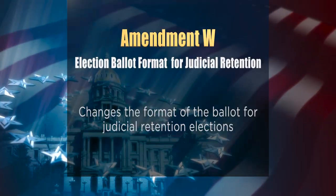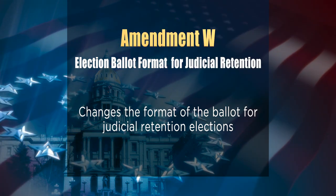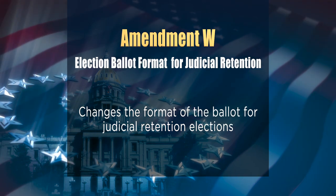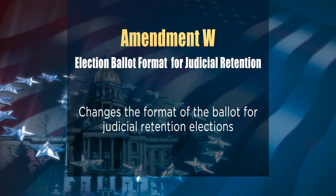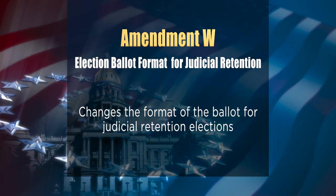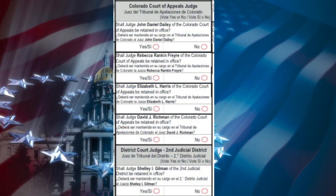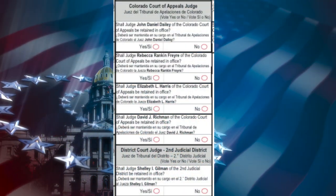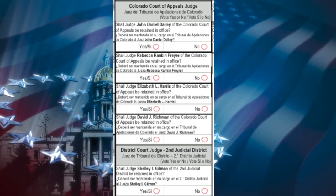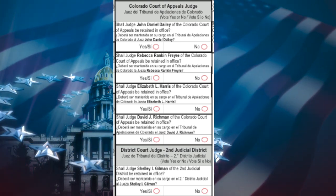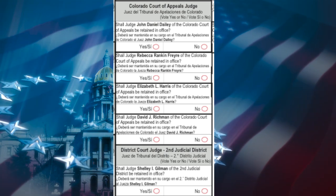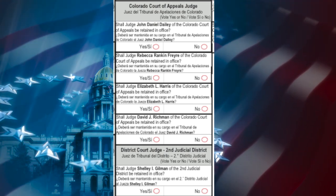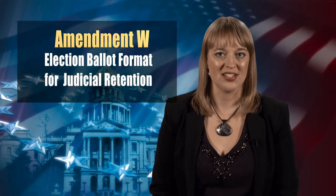Opponents of Amendment V say lack of maturity and life experience may hinder a candidate from being an effective leader, and the current age requirement aligns with other state and federal requirements. Next up is Amendment W. This amendment asks voters if there should be a change in the format of the election ballot for judicial retention elections — meaning whether or not a judge or justice should remain on the bench. Currently, the same question is repeated for each individual judge or justice. This would change to one question for each type of court, with names of all the judges or justices standing for retention.